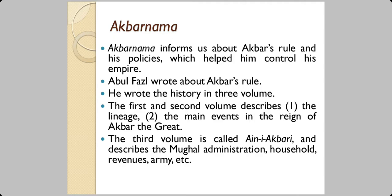Abul Fazl wrote the history in three volumes. In the first and second volumes he described the lineage and ancestry, and also the main events which took place during the reign of Akbar the Great. In the third volume, known as Ain-e-Agbari, Abul Fazl describes the Mughal administration, the Mughal households, the revenue system, the army, and so on.